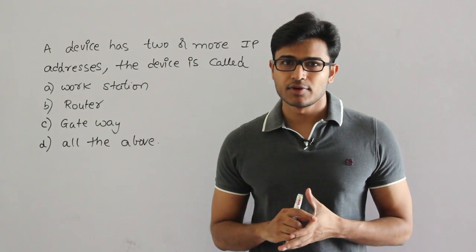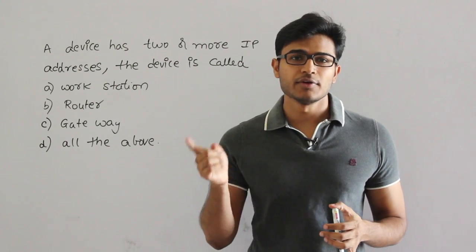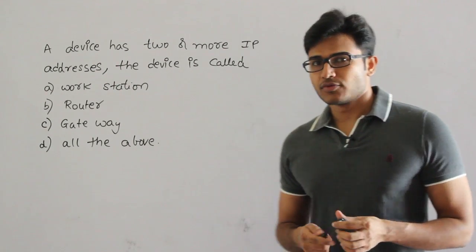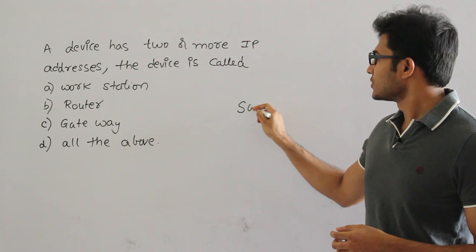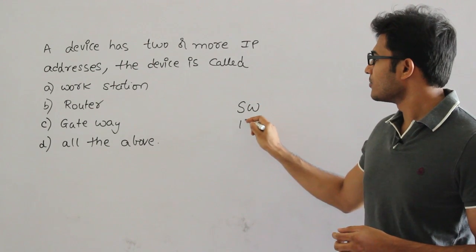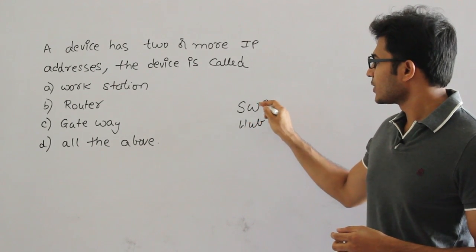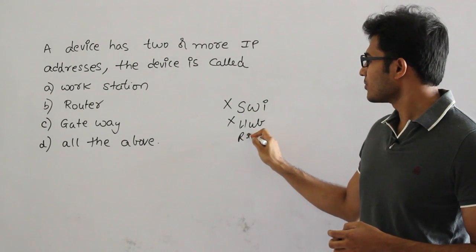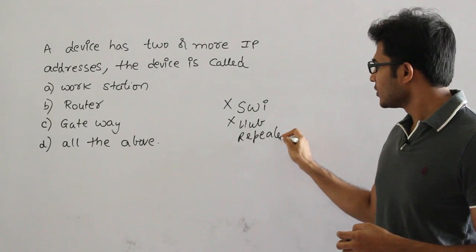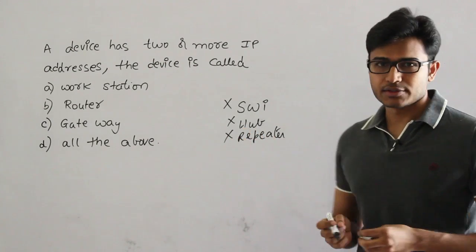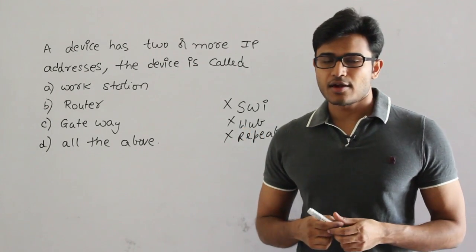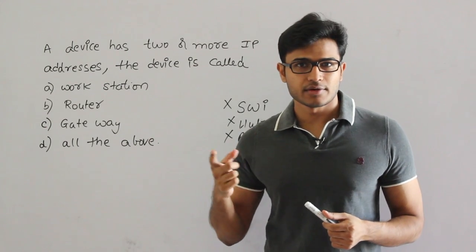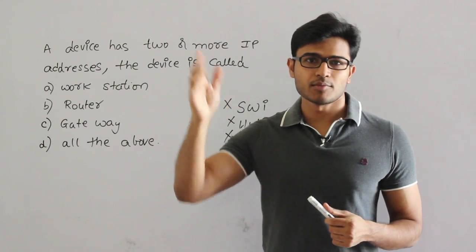First thing is, if a device has to have an IP address, it should definitely have the network layer. Which means, if you look at a switch or hub, that doesn't have a network layer, therefore they will definitely not get any IP address — switch, hub, or repeater. They will not get even a single IP address. If a device has to have an IP address, it should have network layer and above.